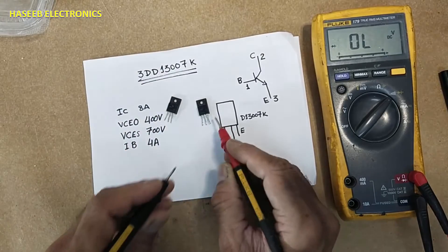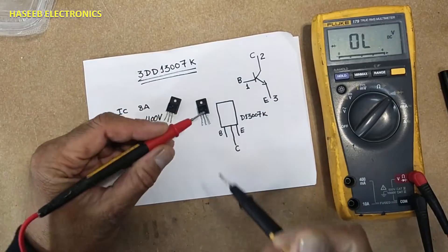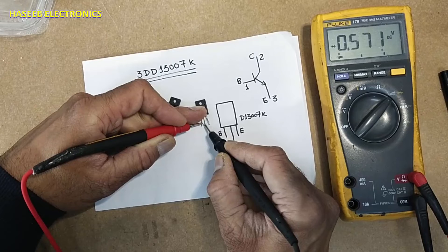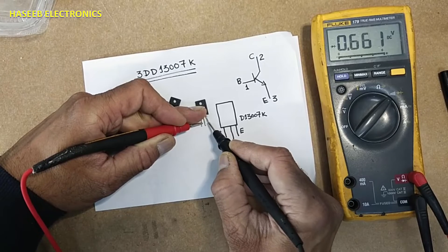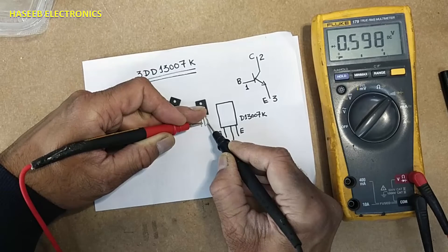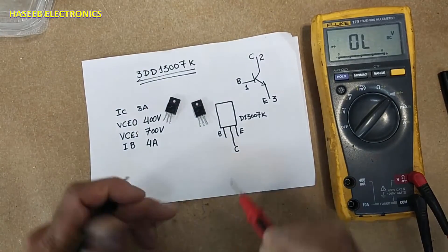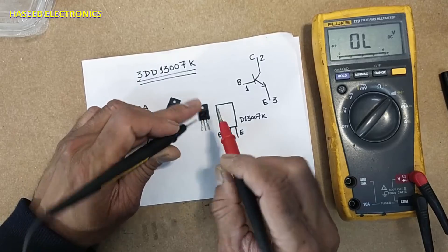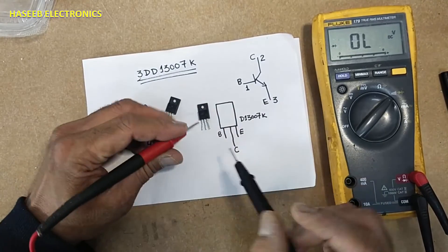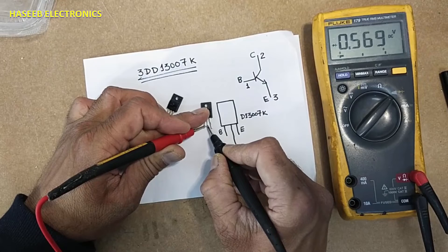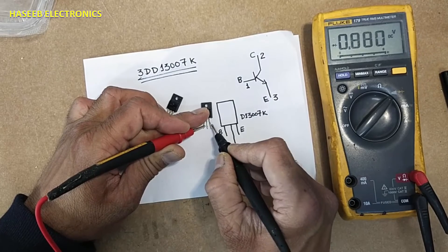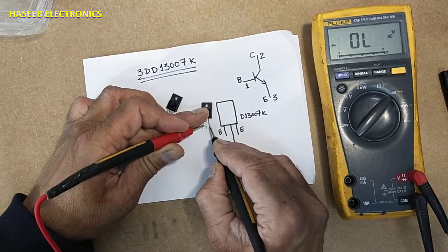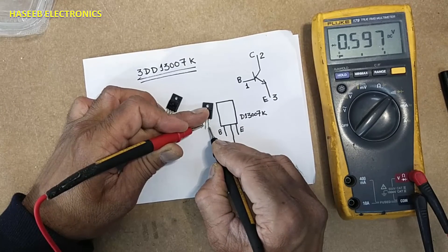This is bad transistor. Now let's check this one, red lead to the left side. 0.571 volt, 0.599. This is good transistor. Reverse the leads. 0.561 volt, 0.561 volt. These are voltage drop between base to collector, base to emitter 0.597.